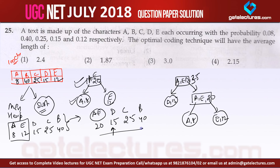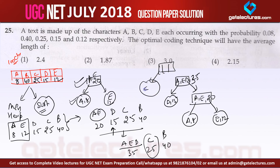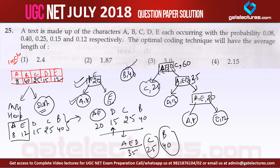Finally, B (frequency 40) is added to complete the tree, giving a root frequency of 100. Now I assign values to the edges: all left edges get 0, all right edges get 1. Following the paths: B is represented by 0 (single bit, left from root); C is represented by 1-0; D is represented by 1-1-0; A is represented by 1-1-1-0; and E is represented by 1-1-1-1.